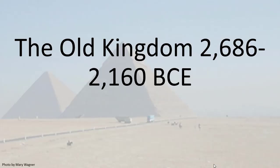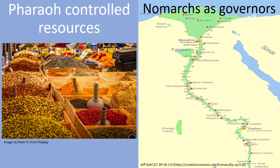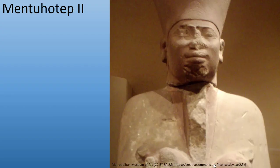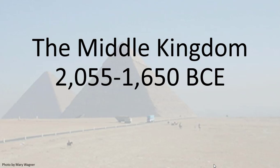The Old Kingdom of Egypt lasted from 2,686 to 2,160 BCE. During these centuries, all of Egypt's resources — both natural and acquired through trade — were owned by the pharaoh. The pharaoh wasn't alone in administering the kingdom; local governors called nomarchs were appointed to control certain territories and were expected to carry out the pharaoh's orders. Eventually these positions became hereditary, and some nomarchs gained enough power to challenge the pharaoh. This challenge to royal power led to the First Intermediate Period from 2,160 to 2,055 BCE, when competitors fought over who would rule Egypt. The First Intermediate Period came to an end in 2,055 BCE when Mentuhotep II reunified Egypt, thus beginning the Middle Kingdom, which would last from 2,055 to 1,650 BCE.